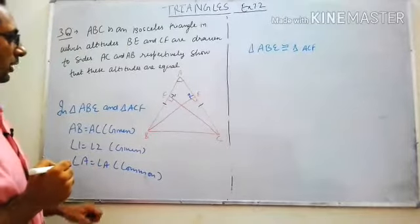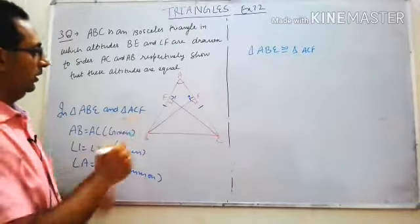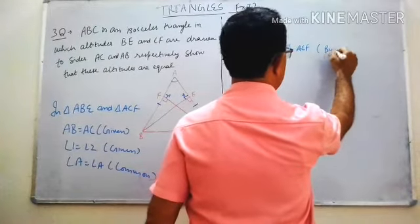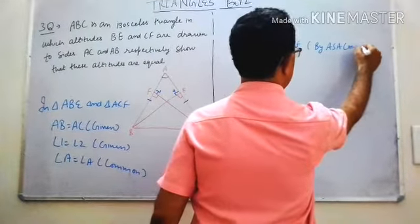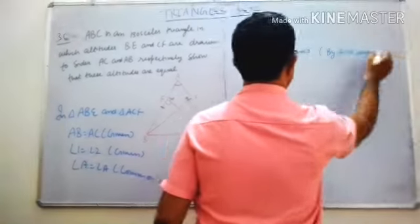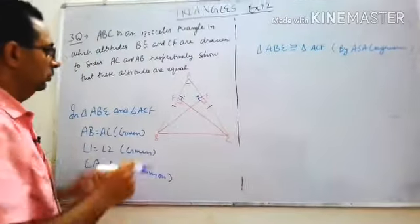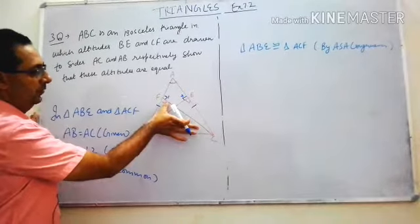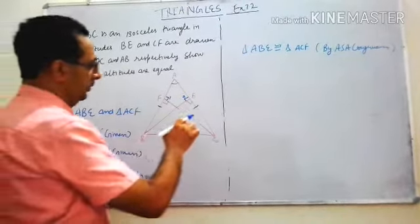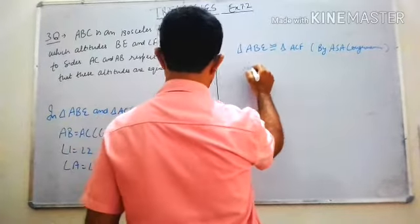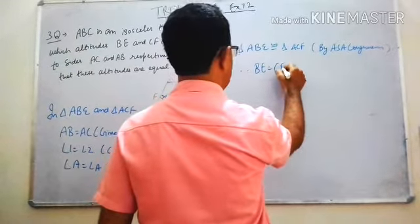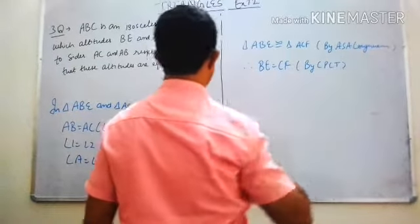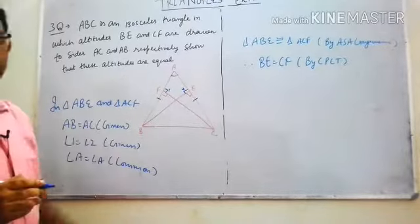Therefore triangle ABE is congruent to triangle ACF by ASA congruency. Since both triangles are congruent, BE is equal to CF by CPCT. This is what we had to prove — the altitudes are equal.